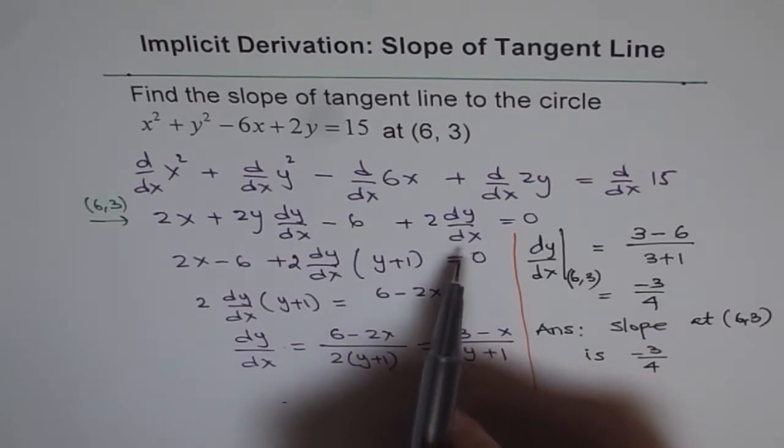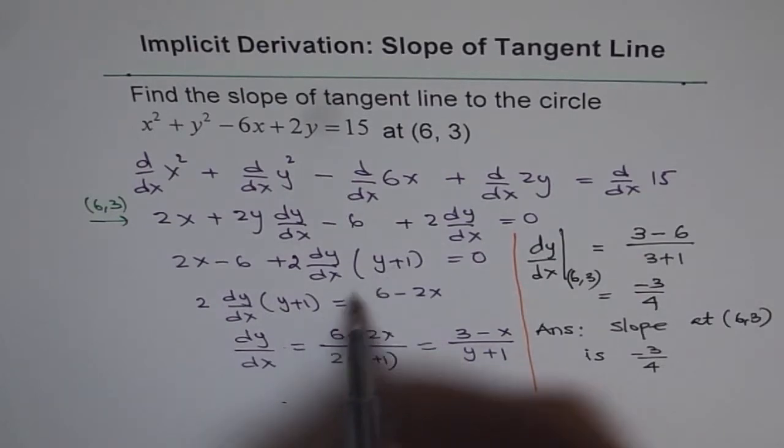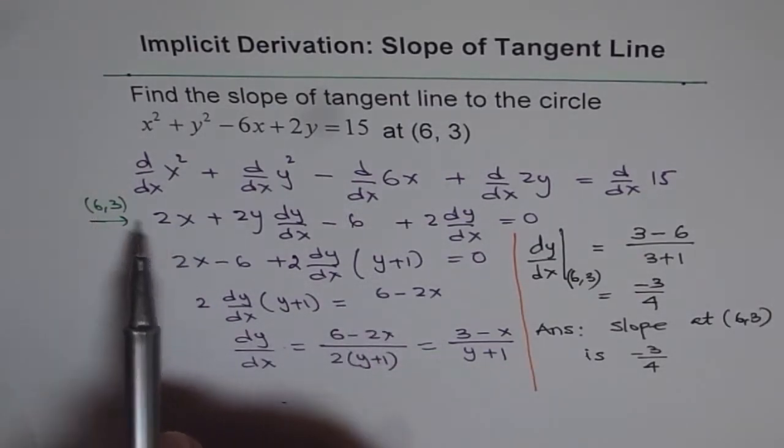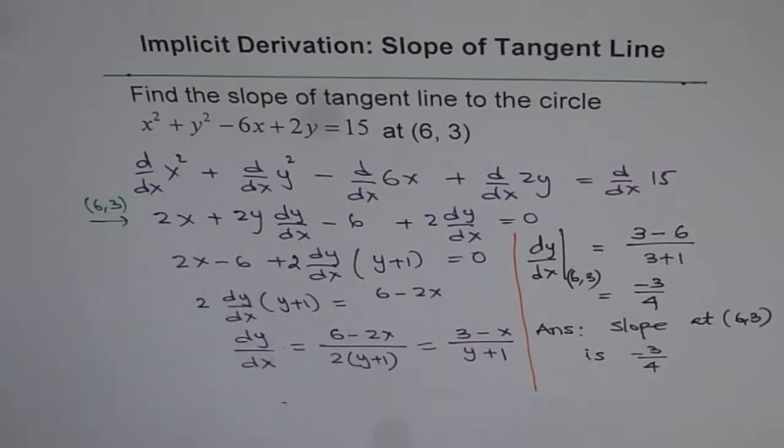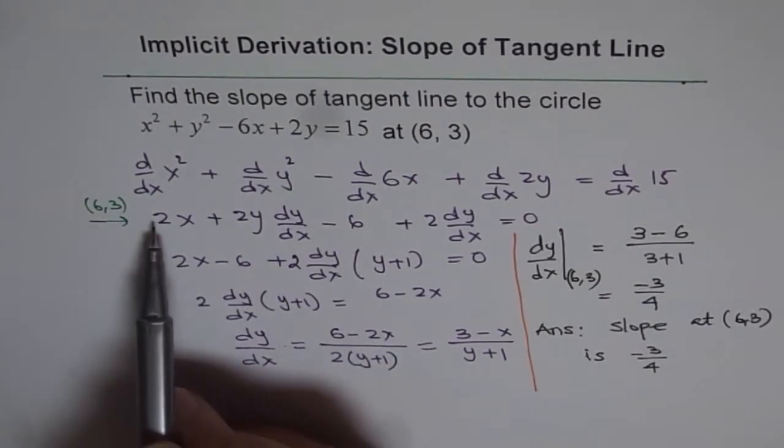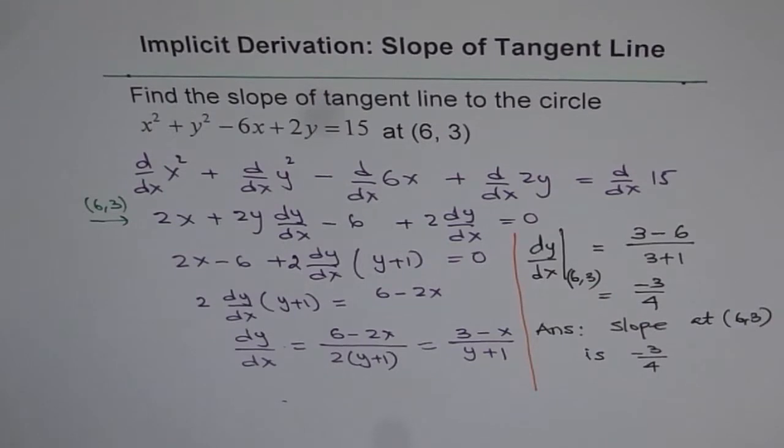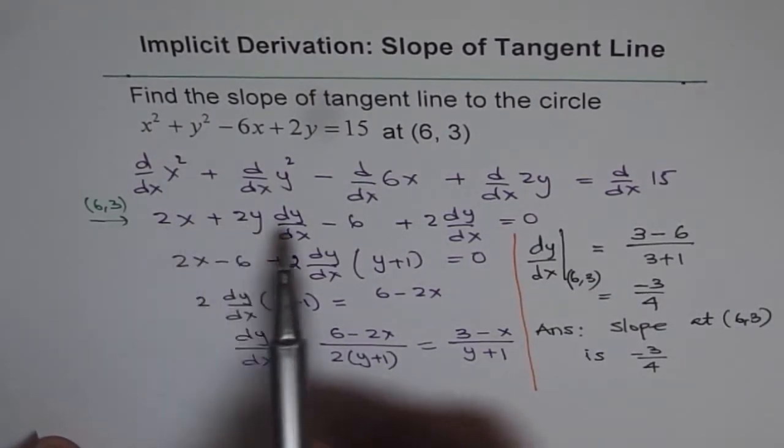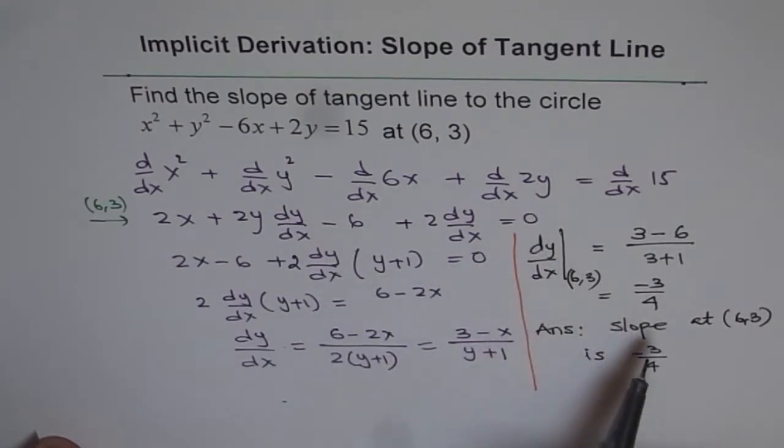We could have substituted (6, 3) in this particular equation and solved for dy dx. That was an alternate method and could have saved us some time. What we could have done is substitute x by 6. In that case you get 6 times 2 is 12, and then 3 for y, and then simplify your equation and get the answer.